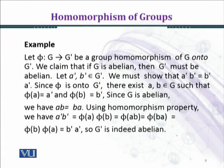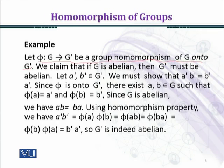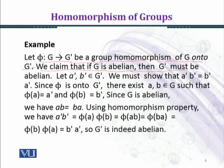Now we are considering an example. Let phi from G to G prime be a group homomorphism of G onto G prime. We want to see that if G is an abelian group, can G prime also be abelian? We are given that phi is a homomorphism. We claim that if G is abelian then G prime must also be abelian.